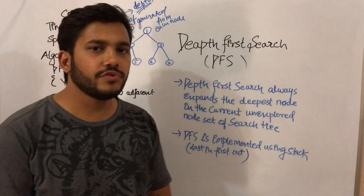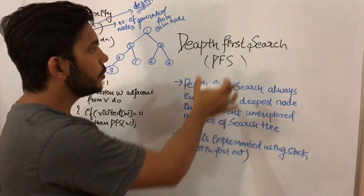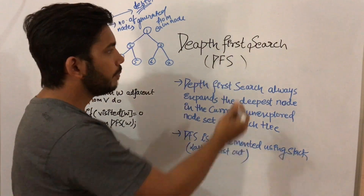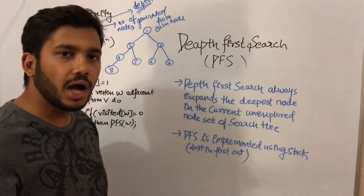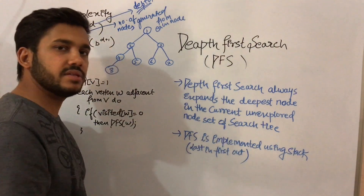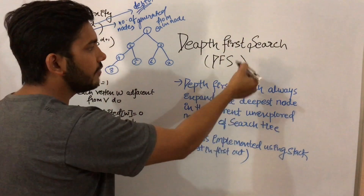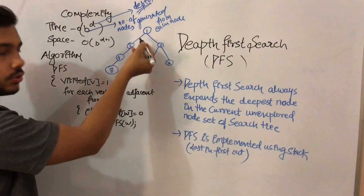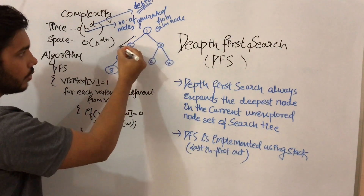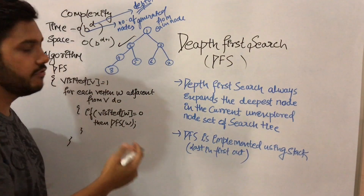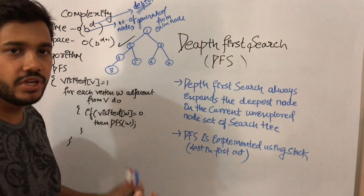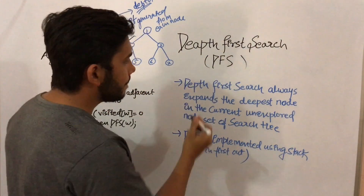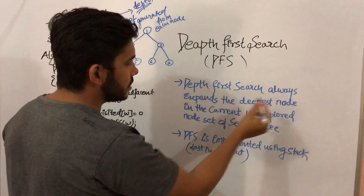In this video I am going to talk about depth first search. It is a type of unguided search, or uninformed search, because at every stage there is no particular information given about which direction we need to search. So basically, what is depth first search?